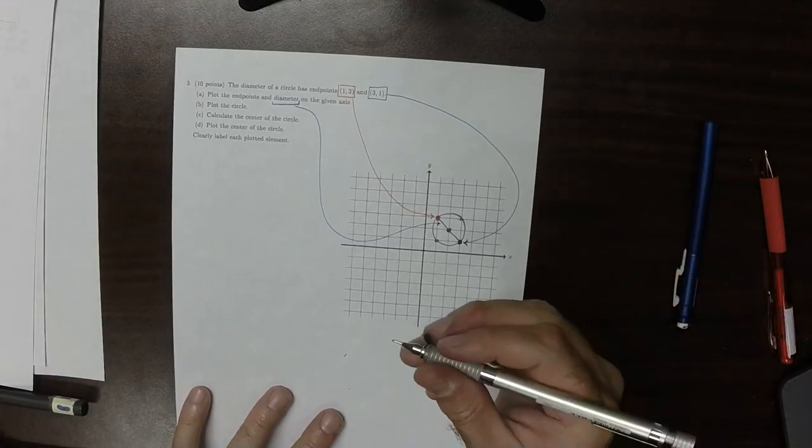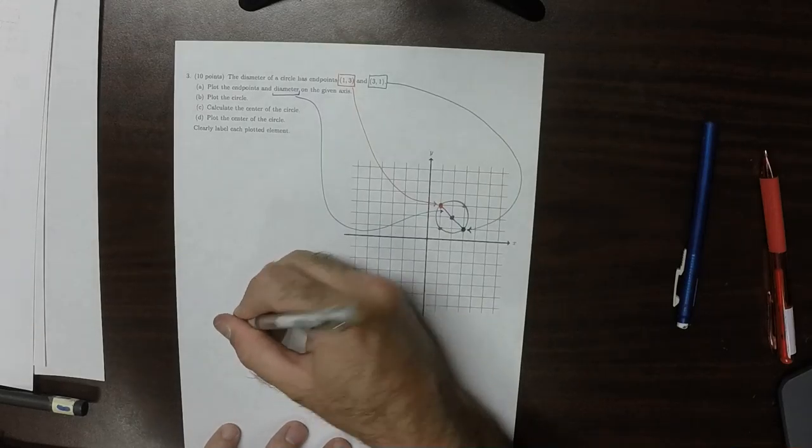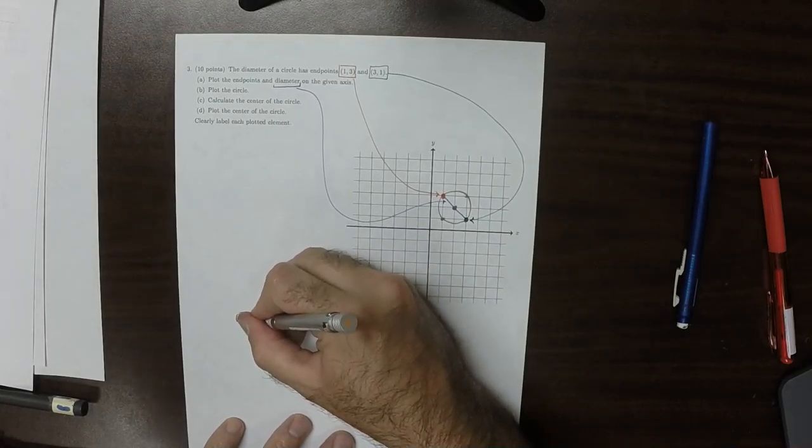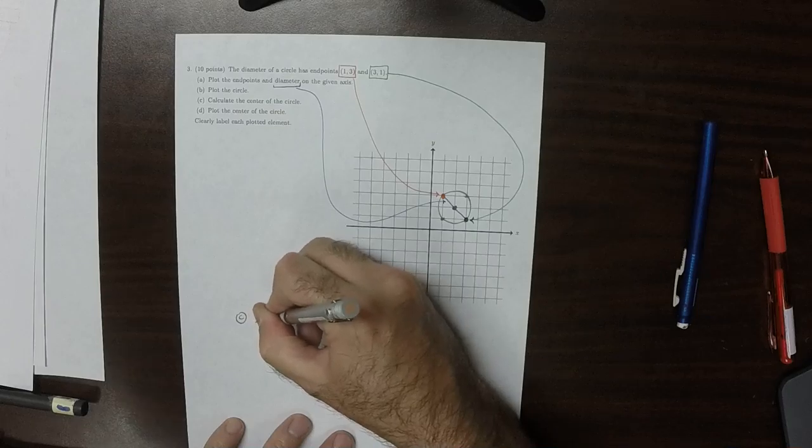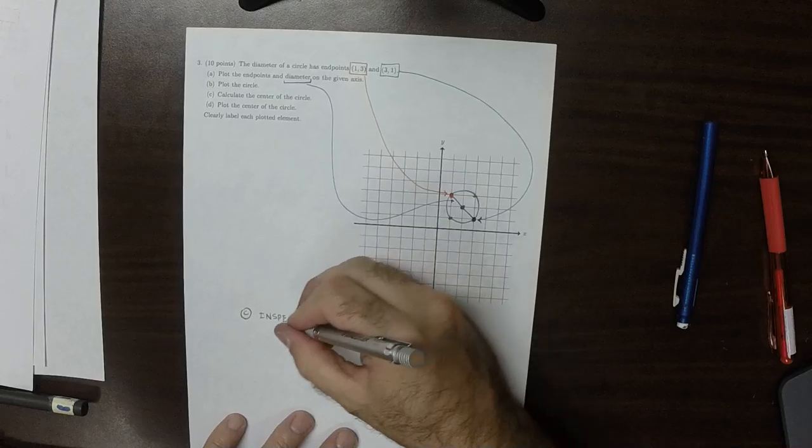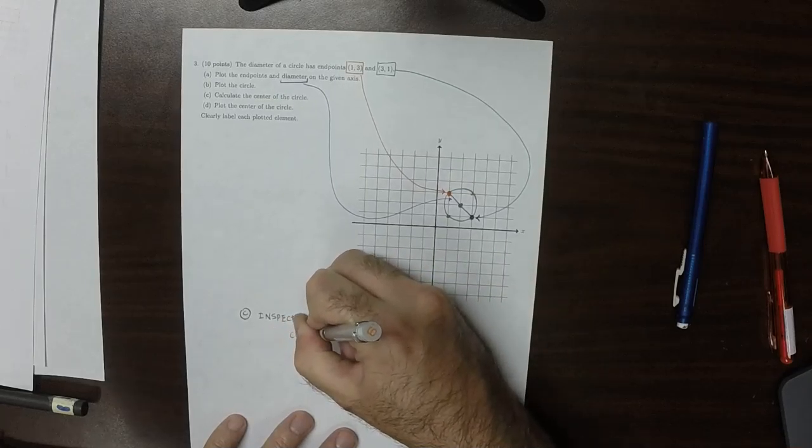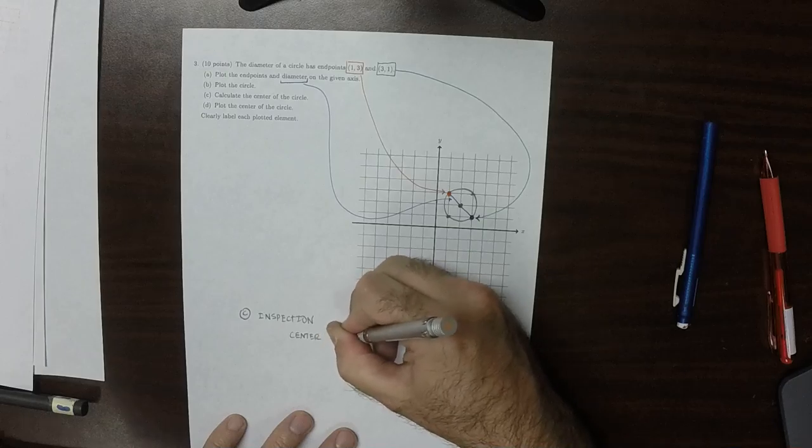So for part c, calculate the center. So you can see from inspection of the plot, the center is 1, 1.